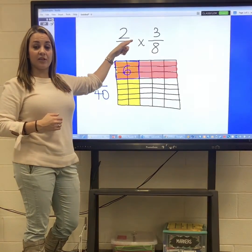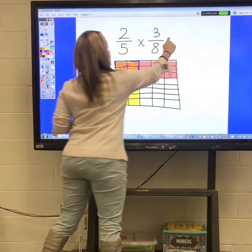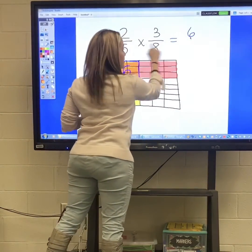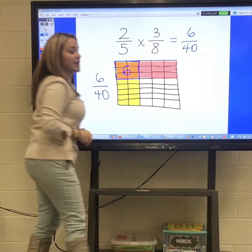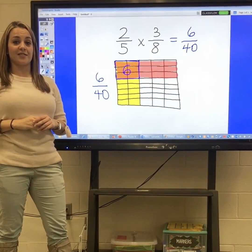And then when you teach how to multiply just straight across, they can see that 2 times 3 is 6, 5 times 8 is 40, and then 2 fifths times 3 eighths is 6 fortieths.